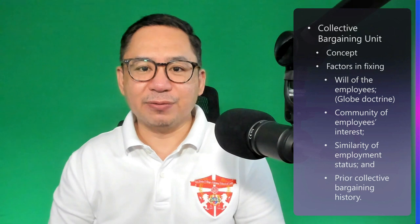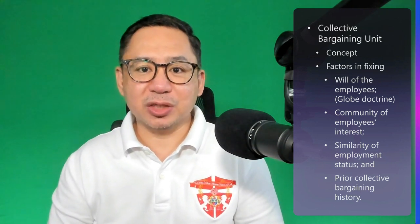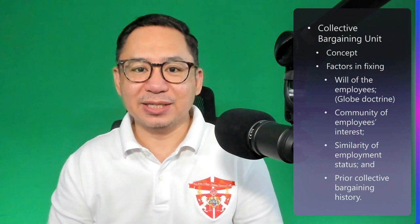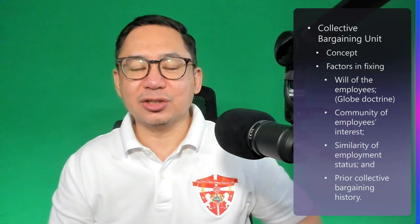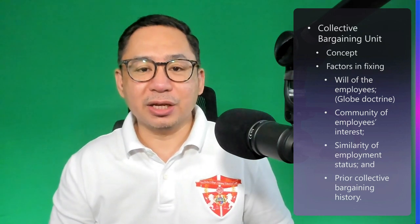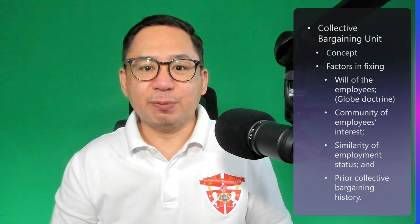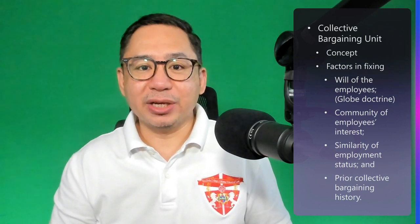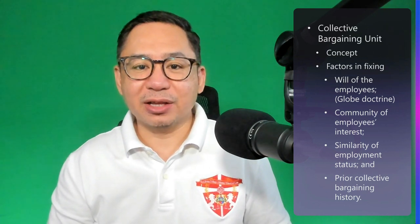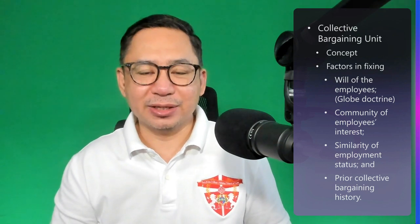Under the Globe Doctrine, the main consideration in fixing the appropriate collective bargaining unit is the express will or desire of the employees. The doctrine sanctions the holding of a series of elections, not for determining the collective bargaining agent, but for permitting the employees in each of the several categories to select the collective bargaining unit.